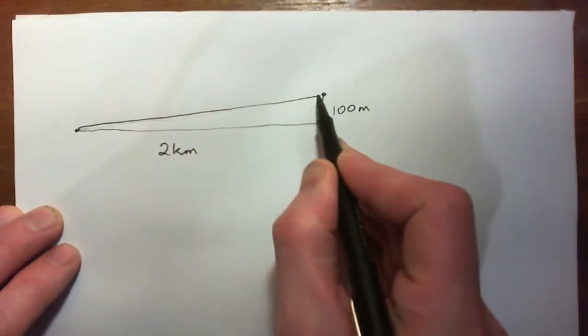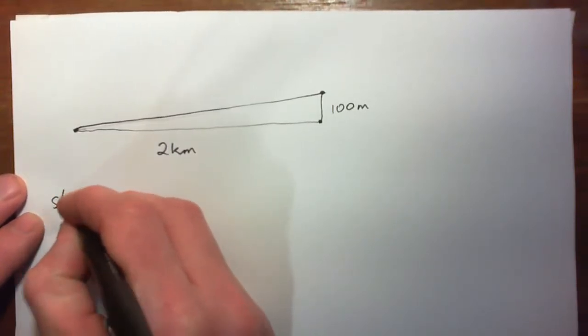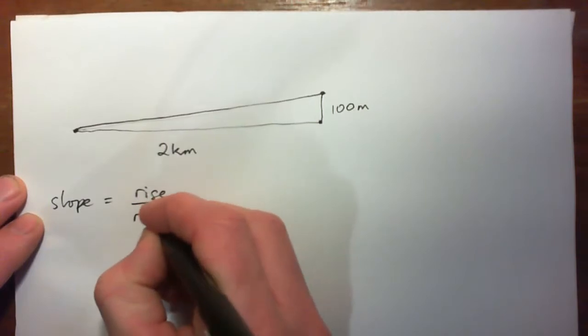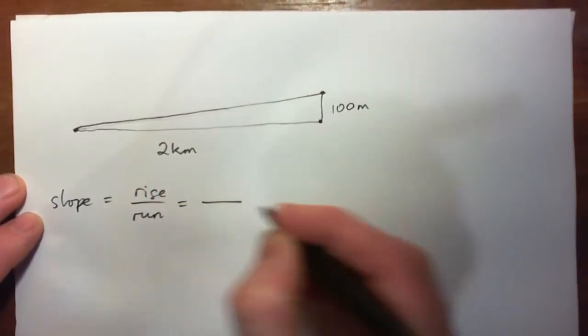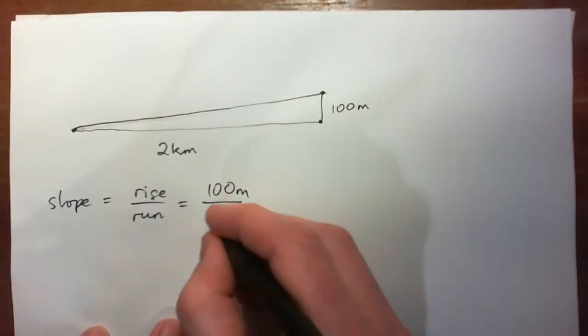So it has a slope and we have to figure out the slope. Now slope equals rise over run. So the rise is 100m and the run is 2km.